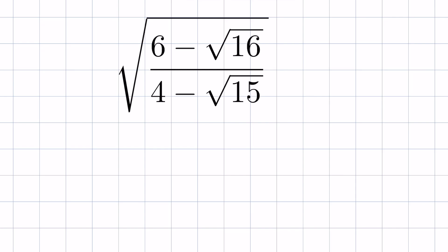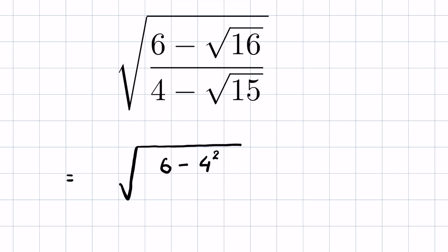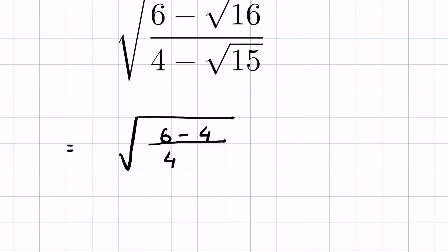Simplify: the square root of (6 minus square root of 16) over (4 minus square root of 15). First, square root of 16 is 4, because 16 is 4 squared, and square root means power of 1/2, so the powers cancel. So this becomes (6 minus 4) over (4 minus square root of 15), which is 2 over (4 minus square root of 15).